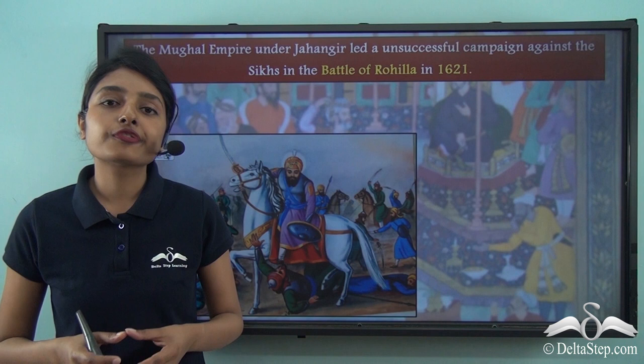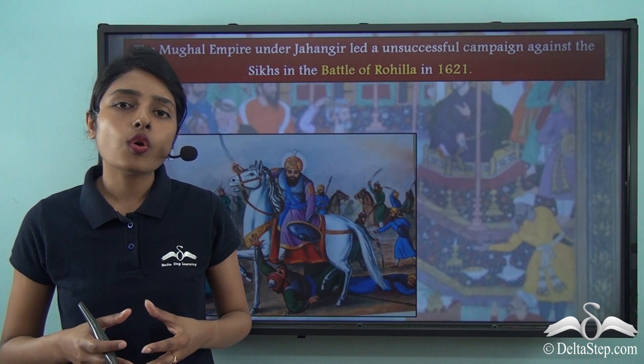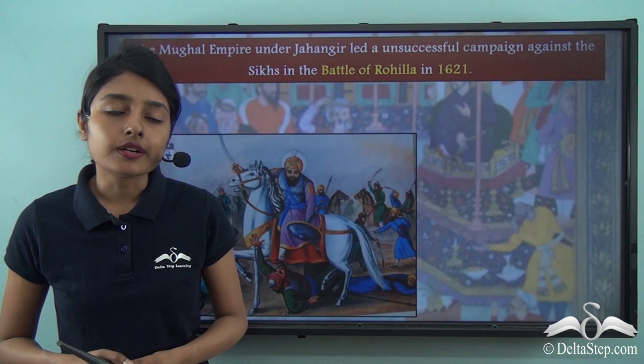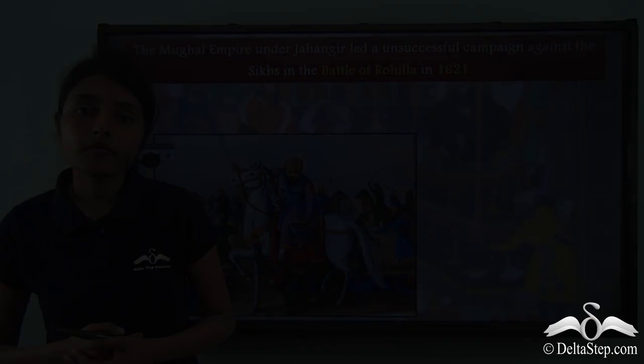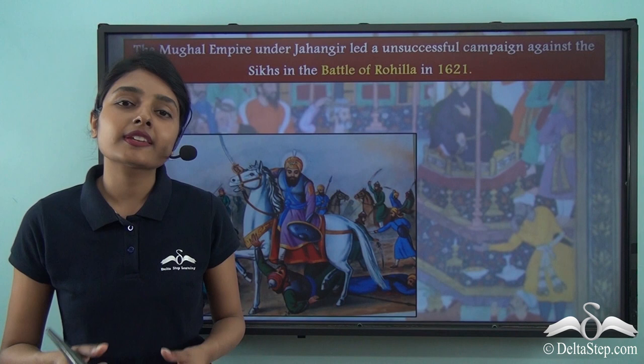Jahangir's treatment of the fifth Sikh Guru Arjan Dev had caused a prolonged hostility between the Sikhs and the Mughal Empire. The Sikhs kept breaking out in revolts and rebellions against the Mughals, wanting to defeat them in the Indian subcontinent. This hostility persisted not just during Jahangir's reign but also during the rule of subsequent Mughal emperors.